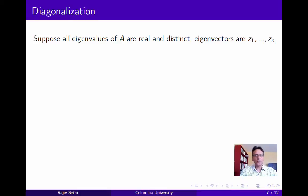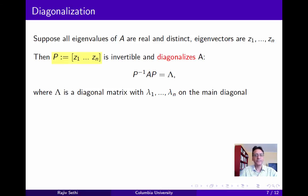Now suppose that all eigenvalues of A are real and distinct, and the corresponding eigenvectors are Z_1 to Z_n, where A is an n by n matrix. Define the matrix P by setting the j-th column of P equal to the j-th eigenvector. Then this matrix is invertible since all the eigenvectors are linearly independent. Furthermore, it can be used to diagonalize A: the matrix P inverse AP is a diagonal matrix lambda, with the eigenvalues lambda_1 to lambda_n on the main diagonal.